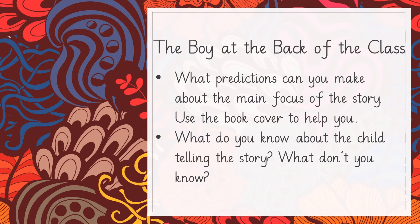The next question — and this is the number one question — you won't be able to answer this if you haven't read any of the book. This needs to be done today. If you haven't read the book, I'd suggest reading at least Chapter One first. The question is: what do you know about the child telling the story, and what don't you know? There's something quite specific about this child that you actually don't know, so you won't be able to answer that until you've read at least a chapter.